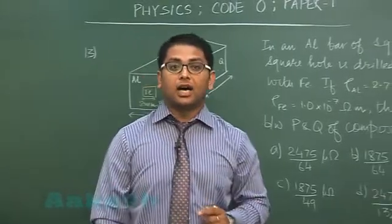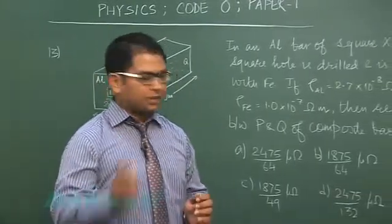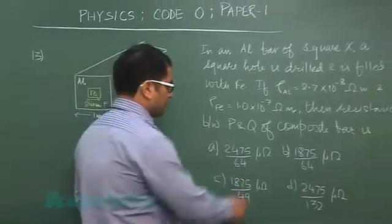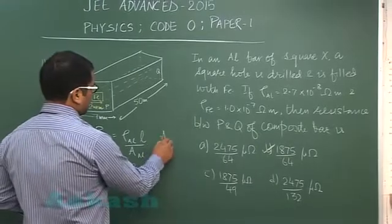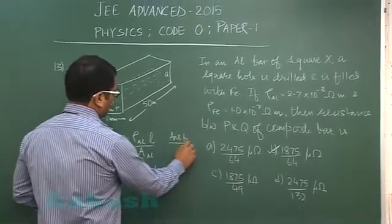Once you calculate these two, the net resistance across faces P and Q - these two resistances would be in parallel, so that would be R1R2 by R1 plus R2. It requires a bit of calculation, but then you would be landing up to option number B. So question number 13 has correct option as B.